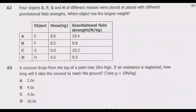Question A2: Four objects E, F, G, and H of different masses are placed at locations with different gravitational field strengths. Which object has the largest weight? This is simply a matter of applying weight equals mass in kg times gravity. We need to multiply each mass by its gravitational field strength and find the largest result — we have a calculator available.